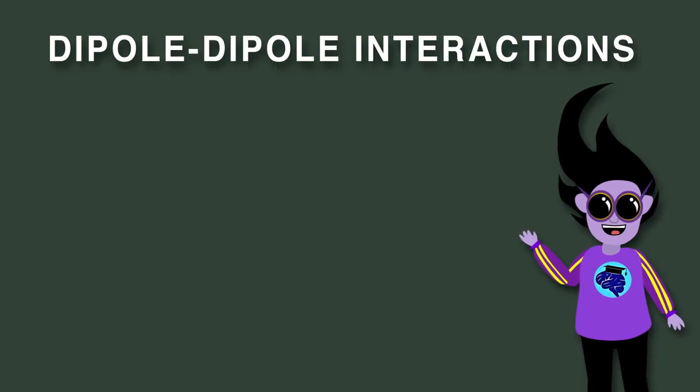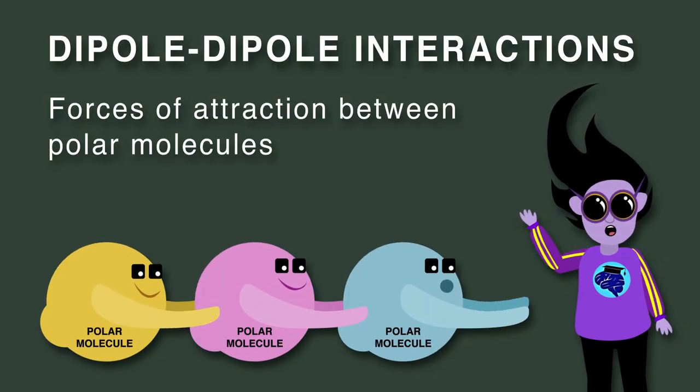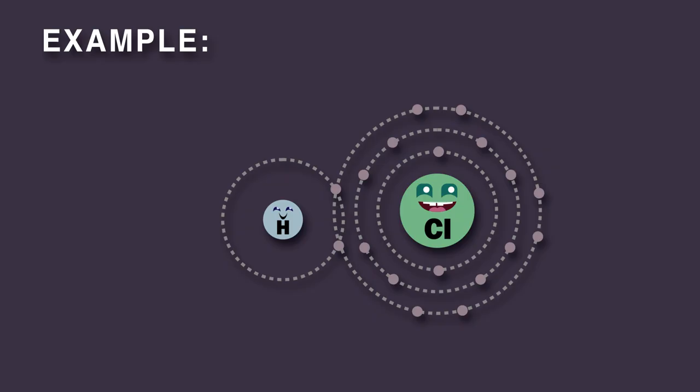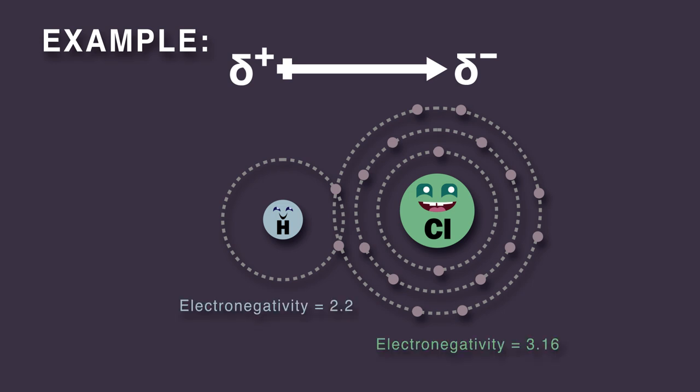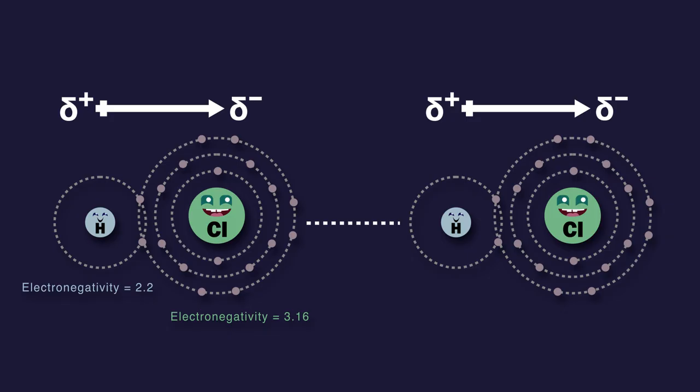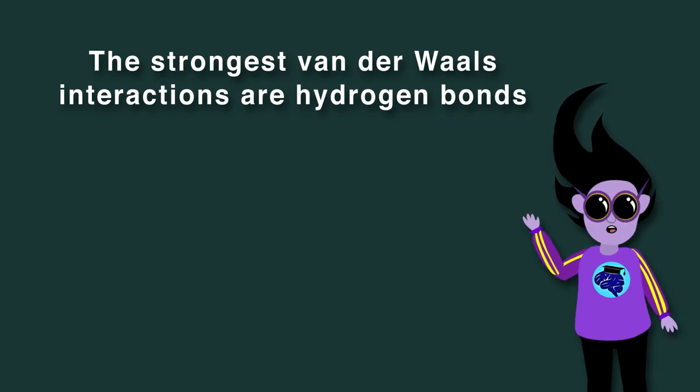Dipole-dipole interactions are stronger. These are forces of attraction between polar molecules. For example, HCl has a dipole. The chlorine atom is much more electronegative, and so the electrons spend more time near it. When two HCl molecules are nearby, the negative end of one is attracted to the positive end of another.